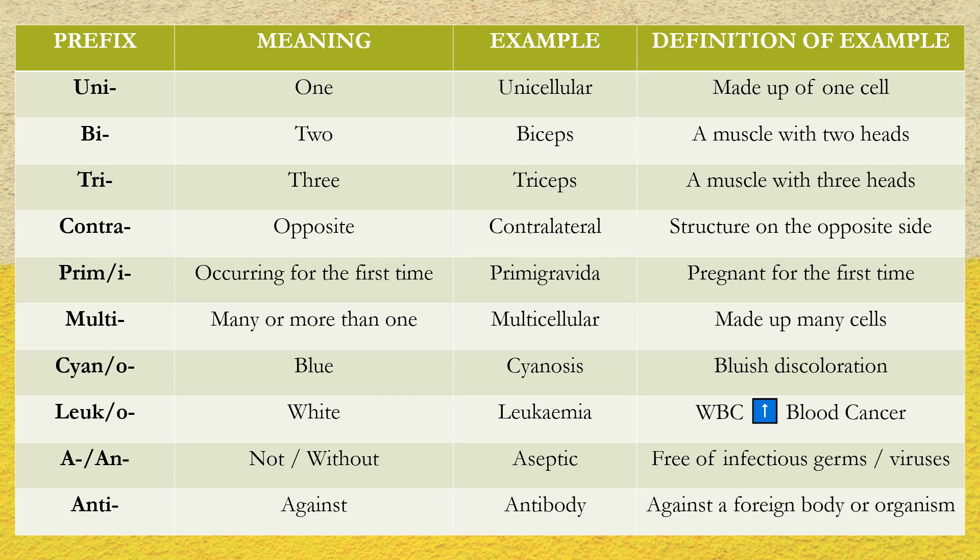The first prefix here is 'uni,' which means one — the example is 'unicellular,' meaning an organism made up of a single cell, such as an amoeba. Another one is 'leuk,' meaning white in appearance — leukocytes, which are white blood cells, when they multiply uncontrollably, lead to leukemia. I'll give you a moment to pause the video and go through the list.